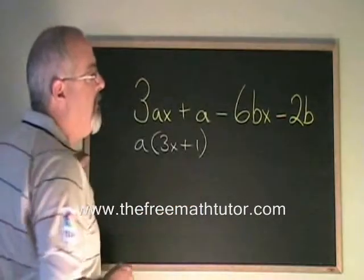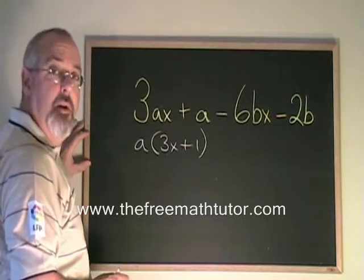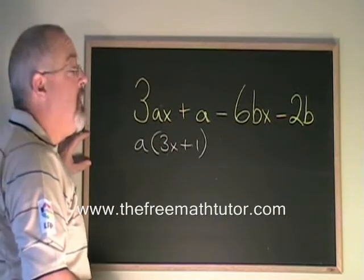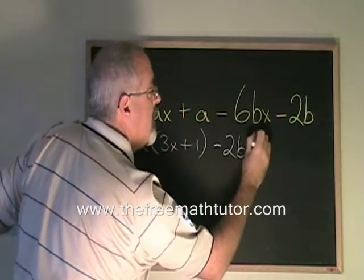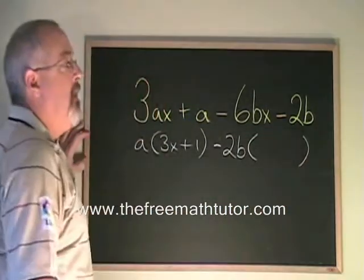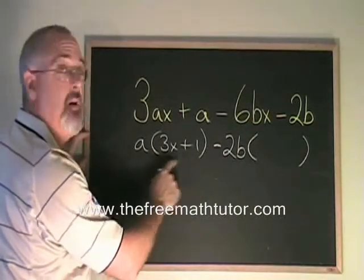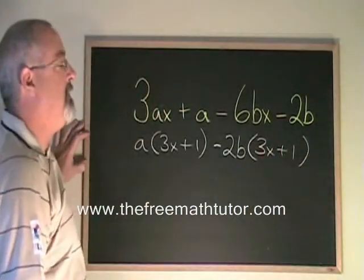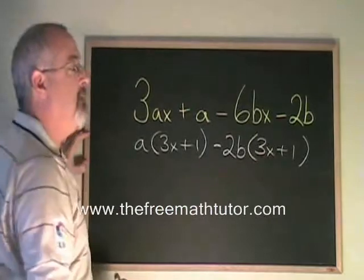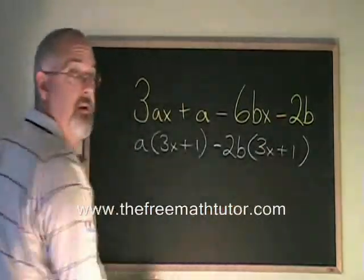Over here, the last two terms have a common factor of either negative 2b or positive 2b. If I factor out a minus 2b, what I will get inside the bracket will be the same as what I got over here, 3x plus 1. Minus 6bx divided by negative 2b is positive 3x. Minus 2b divided by negative 2b is equal to positive 1.